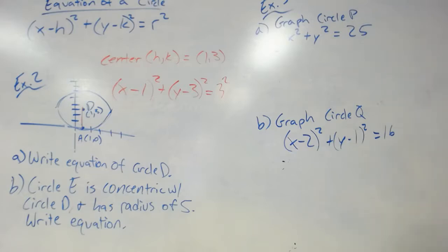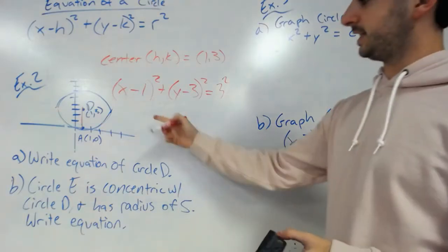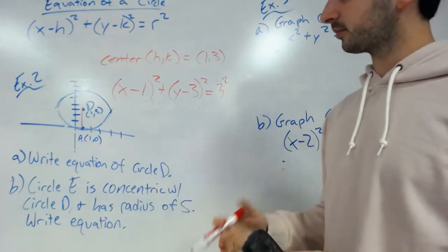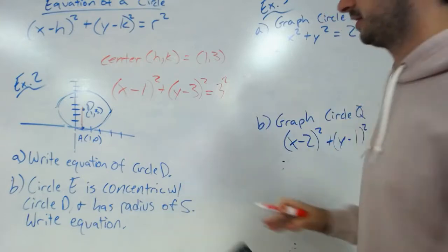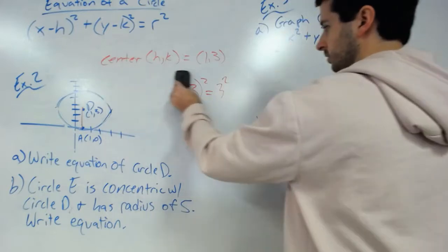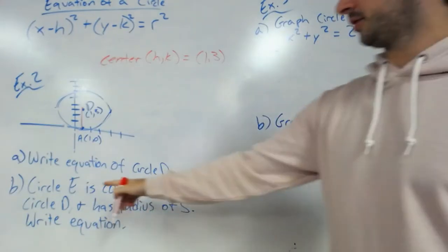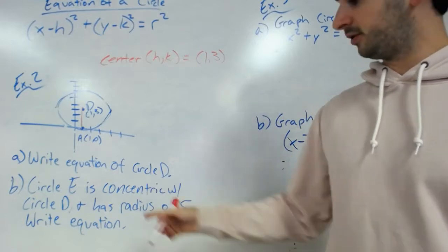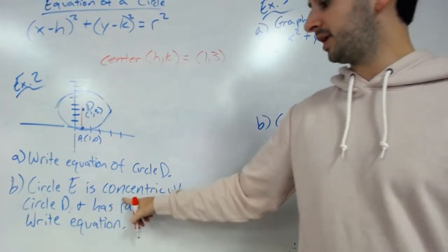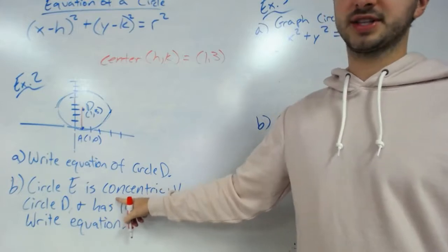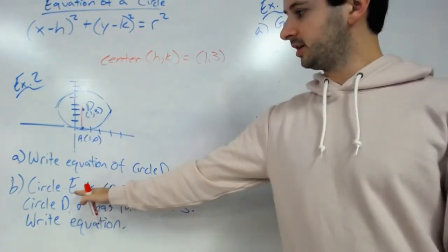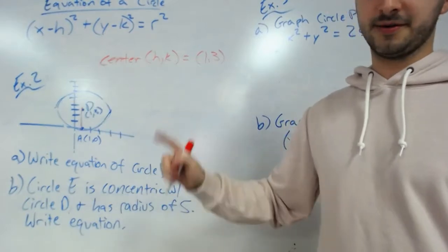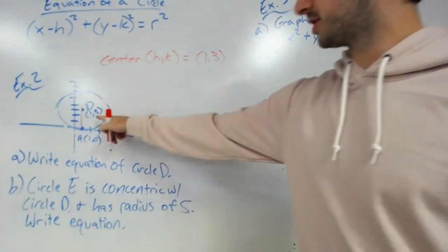Now let's look at part b where it says circle E is concentric with circle D. What does concentric mean? If you remember from past lessons, concentric means a circle with the same center. So circle E, we don't know the size yet but we do know the center is still (1, 3).